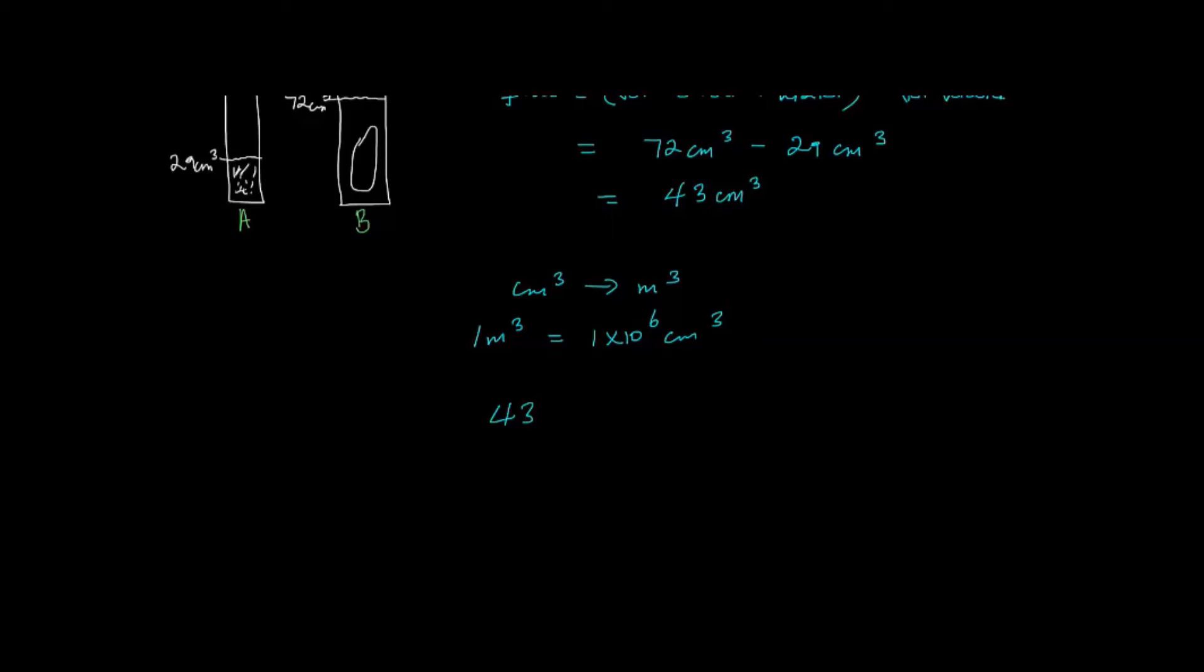So 43 centimeters cubed divided by 1 times 10 to the 6. And that gives us a value of 4.3 times 10 to the minus 5 meters cubed. So this is the volume of the rock.